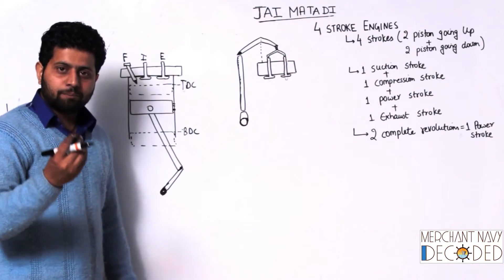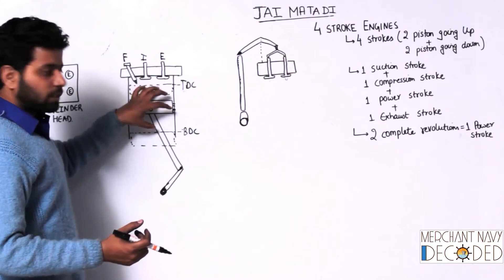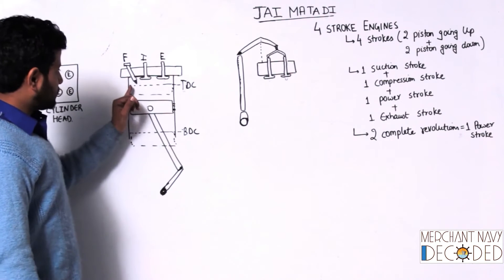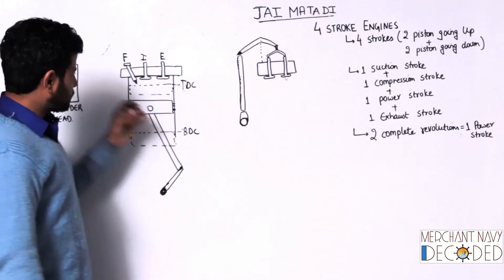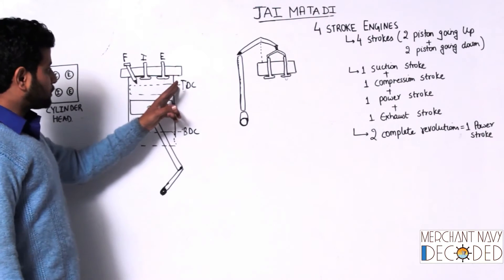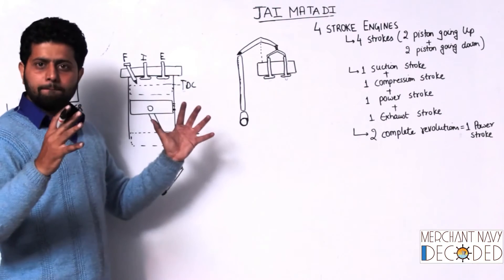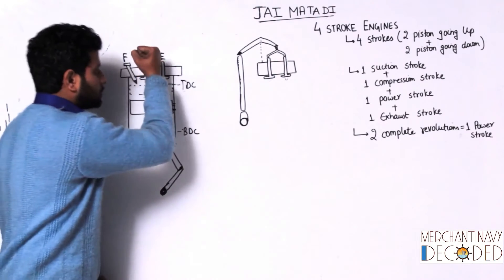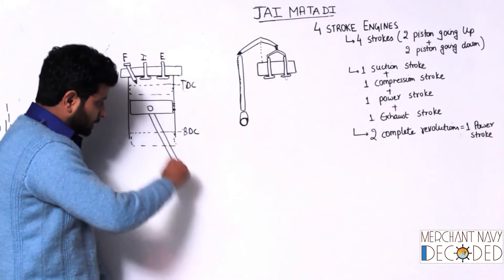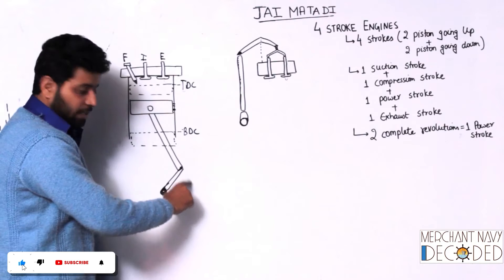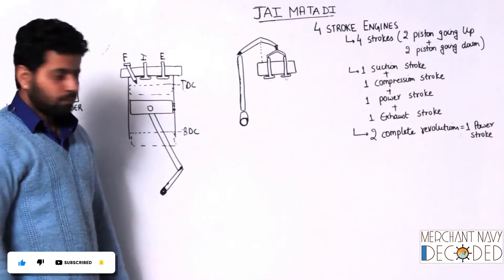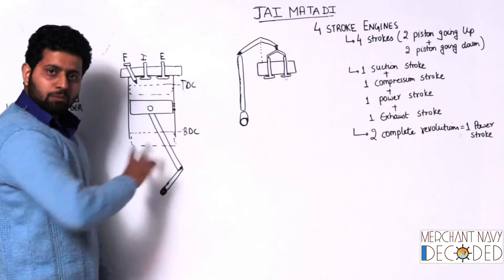Slowly, slowly, the temperature of the gas starts increasing. When the piston reaches up — say just a little bit before TDC — the injection of fuel oil happens. The piston comes around TDC and starts to come down. Explosion takes place and the piston moves down. Pressure is applied, transmitted to the connecting rod, a torque is applied and the crankshaft rotates. So the power stroke happens — the piston comes down.